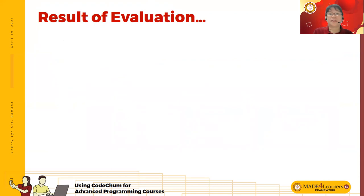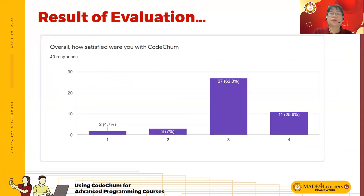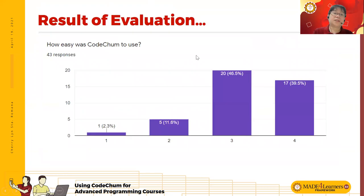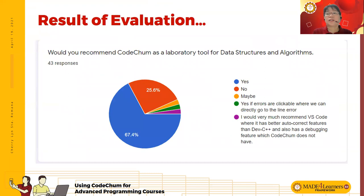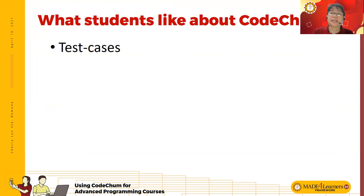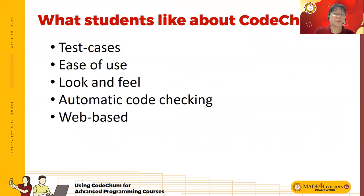We evaluated the course and asked students if they were satisfied with Cochum. 27 said they are satisfied and 11 said they are very satisfied. 67% said they would recommend Cochum as a laboratory tool. They said they like the test cases because it gives them a sense of correctness — they're guaranteed a good score if they solve the problem correctly. They also liked the ease of use, look and feel, automatic code checking, and the fact that it's web-based so they have a repository of all their exercises.